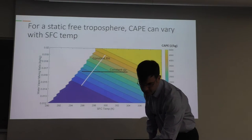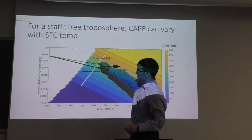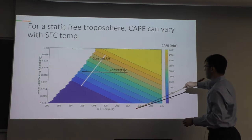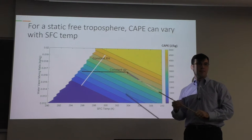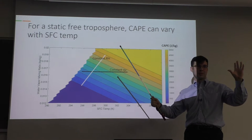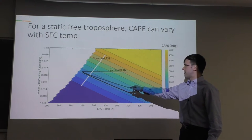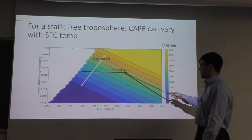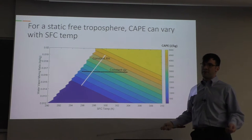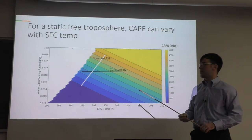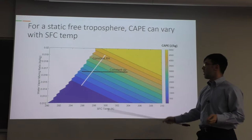This is illustrated in a diagram of surface characteristics — surface water vapor mixing ratio versus surface temperature, with CAPE contours, using a static free troposphere temperature profile. For constant water vapor mixing ratio, as you increase surface temperature, CAPE increases. For constant relative humidity, the same is true but at a greater rate, because water vapor increases as temperature increases. So if RH or mixing ratio stays constant, we'd expect CAPE to increase.